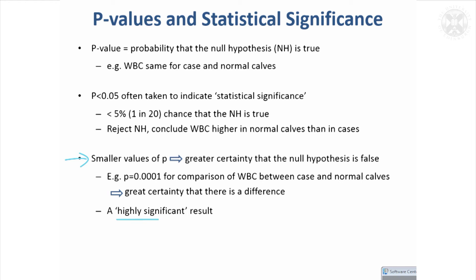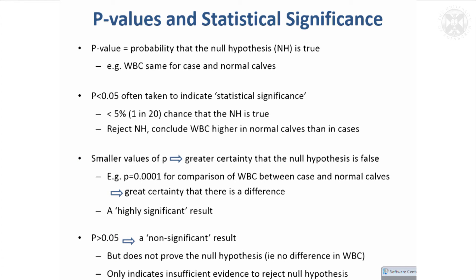One thing to be wary of: quite often you'll have p-values that are not significant, and it's tempting to say there's no difference in your groups — but sometimes that's not true. It might just be that you haven't got enough data to show a difference. If you get a non-significant p-value, what you're really concluding is that you haven't proved the null hypothesis false; you haven't got enough evidence to reject it. You can't ever conclude the groups are the same — only that you haven't proved they're statistically different.